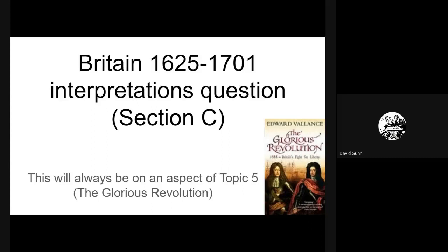In this video I'm going to talk through the exam technique for the interpretations question for Paper 1, which is on Britain 1625-1701. This is Section C of the exam and it's always going to be on an aspect of Topic 5. This is a compulsory part of Paper 1, so it's very important that you get your head around this and feel confident with these questions.